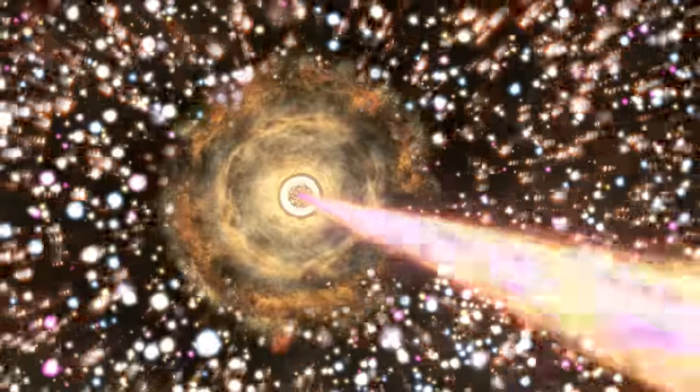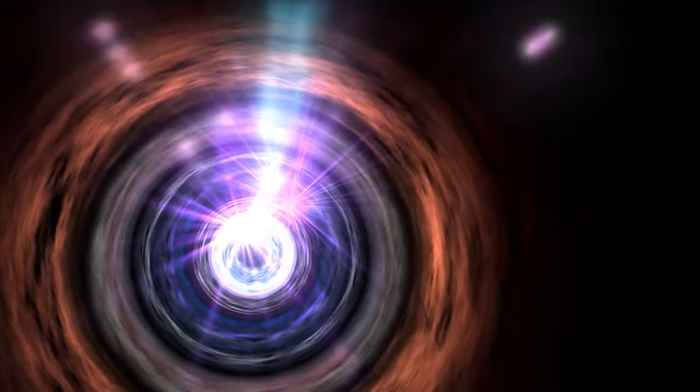Those gamma rays originated from the particle jet produced by the galaxy's supermassive black hole. Astronomers think they started their journey only about five light years from the black hole. Escaping the galaxy's crowded central regions means this high-energy light never interacted with matter or starlight, collisions that would have doomed them to convert into particles.